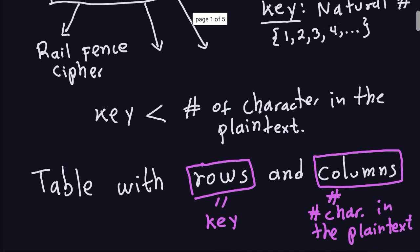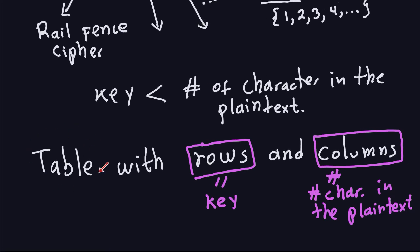Once Alice and Bob decide on the key — assuming the key is strictly less than the number of characters in the plaintext — what we're going to do is consider a table made out of rows and columns. The number of rows in that table is exactly equal to the key you chose. The number of columns is exactly equal to the number of characters in the plaintext. Then you place the plaintext in that table in a zigzag manner. It's better to look at an example to make this very clear.